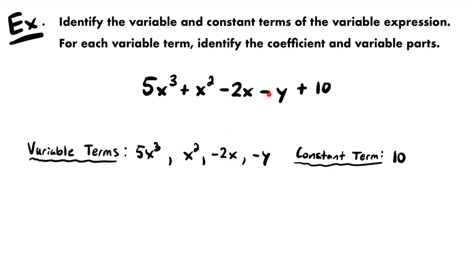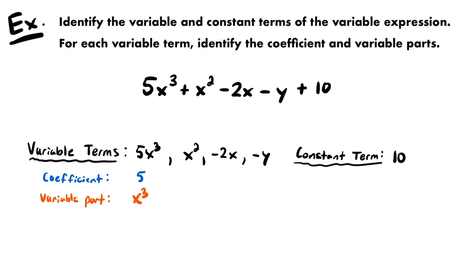Now let's identify the coefficient and variable parts for each variable term. Starting with 5x cubed, the coefficient is 5, which means the variable part would be x cubed. Moving on to x squared, the coefficient seems tricky at first because you don't see a number — but remember, if there's nothing in front of the variable, that just means the coefficient is 1. That variable is being multiplied by 1. So the coefficient is 1 and the variable part is x squared.